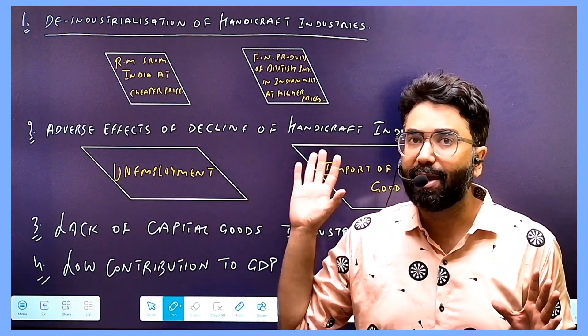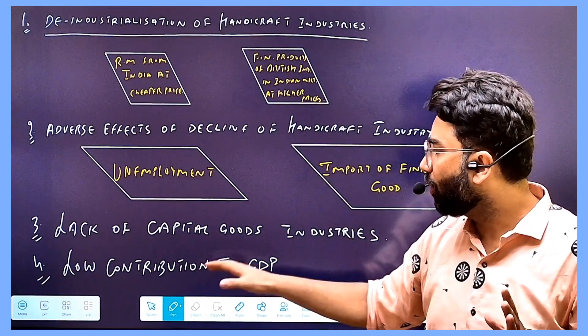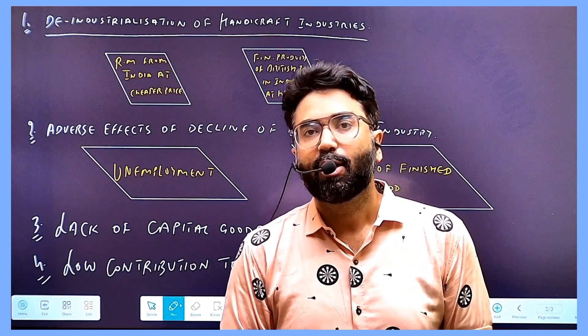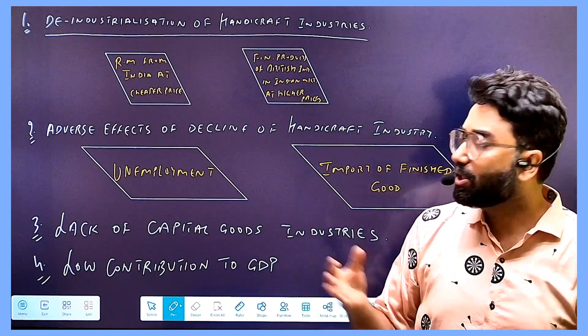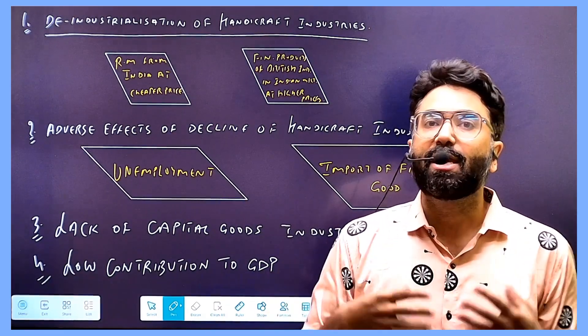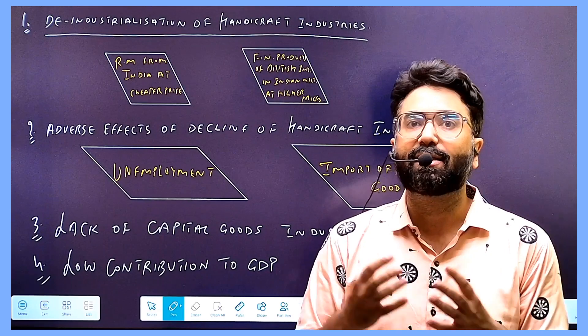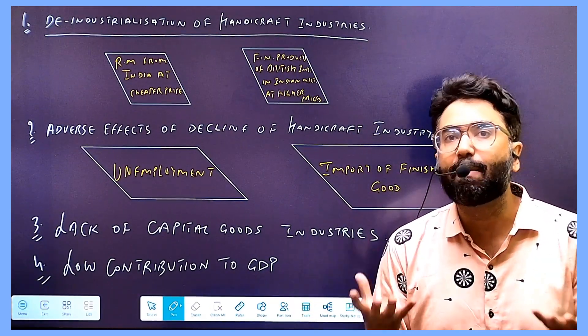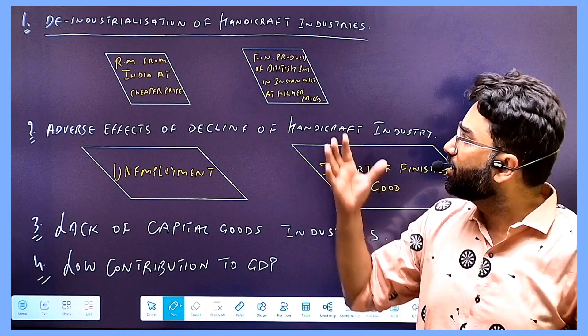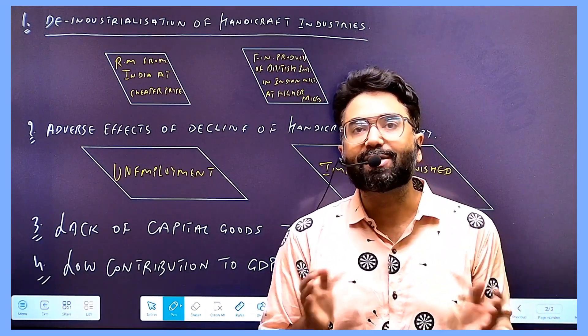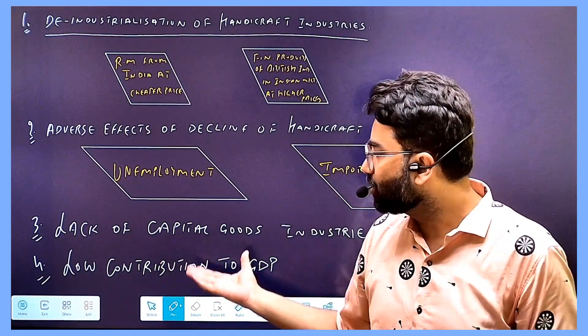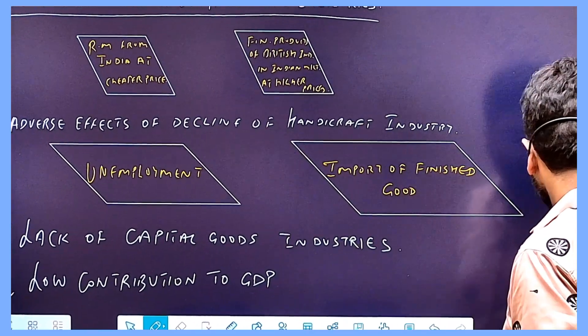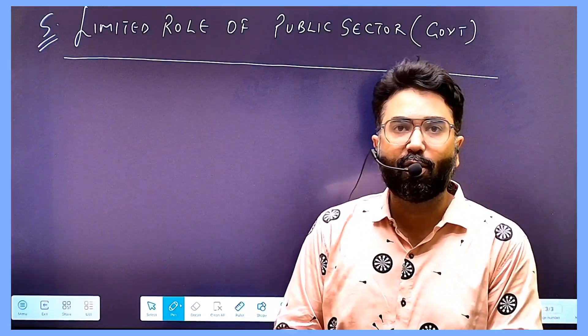Now we talk about low contribution to GDP. When production is not happening, goods are not being manufactured, so how can we contribute to GDP? GDP means the value of goods and services produced in our economy in one year. When the industrial sector is not functioning, there's no production, so there's limited contribution to GDP and limited role of the public sector.